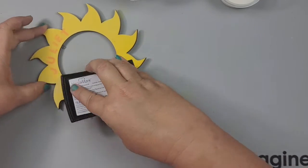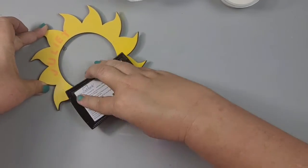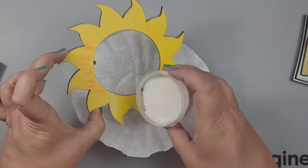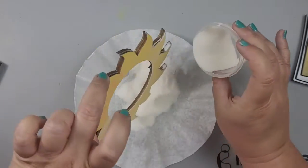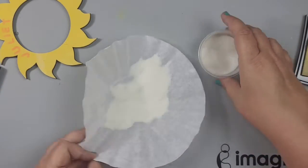So now I am inking up the rest of the sun. The reason why I did it this way was because I couldn't tell where I started with the Versamark and where I finished. So I figured with the powder on there I would be able to see.